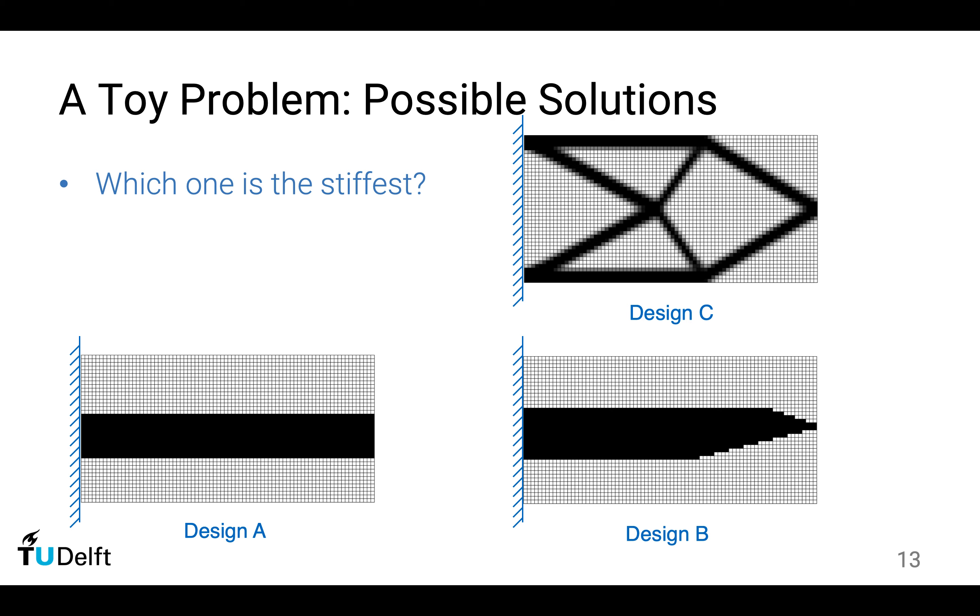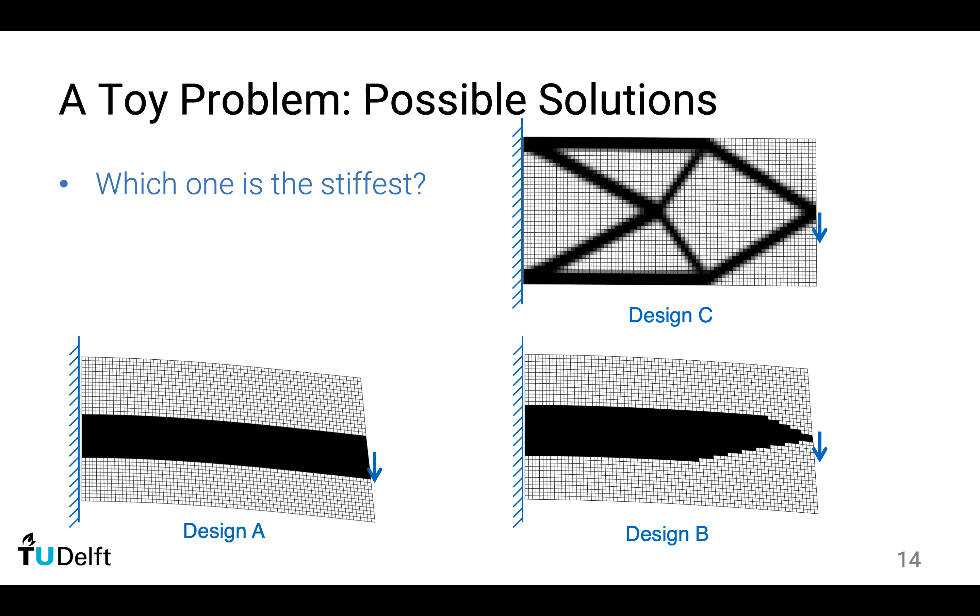We could fabricate this geometry, do mechanical tests. We could also do mechanical tests in a computer by using finite element analysis, which we have explained in our last lecture. This shows the finite element analysis result. If we superimpose the reference geometry, we could observe design C has the least amount of deformation, which is almost invisible in this case.